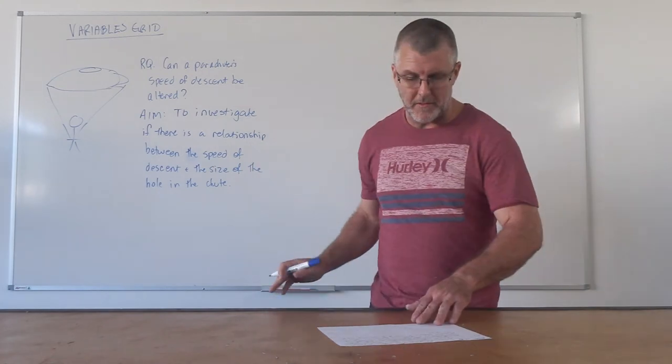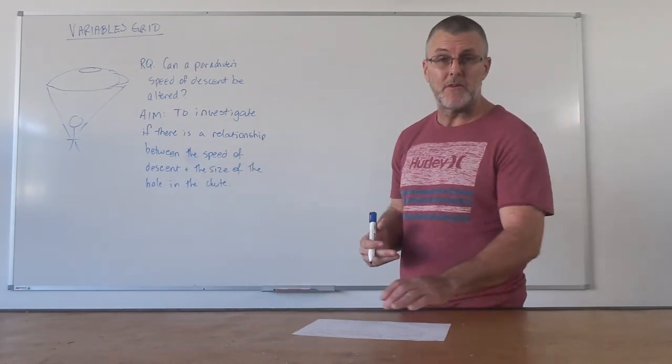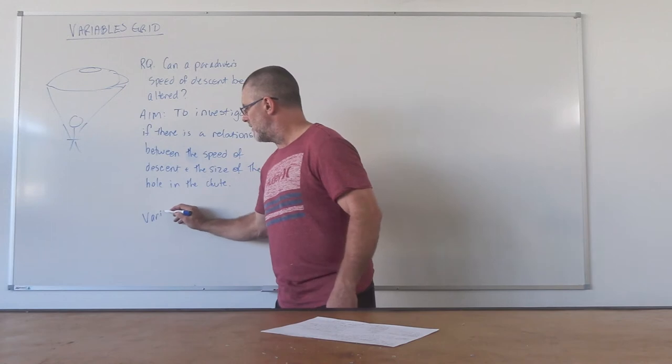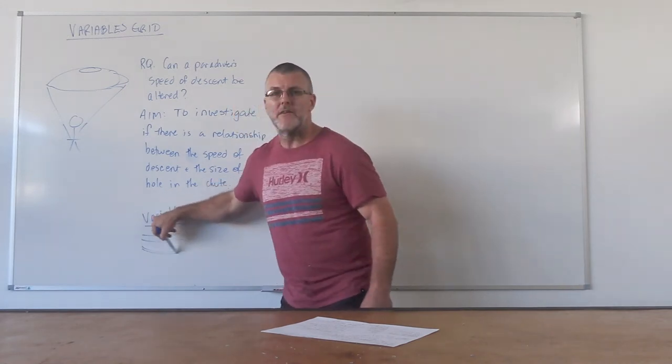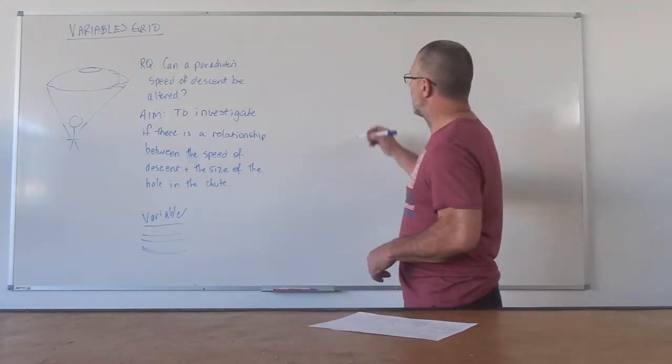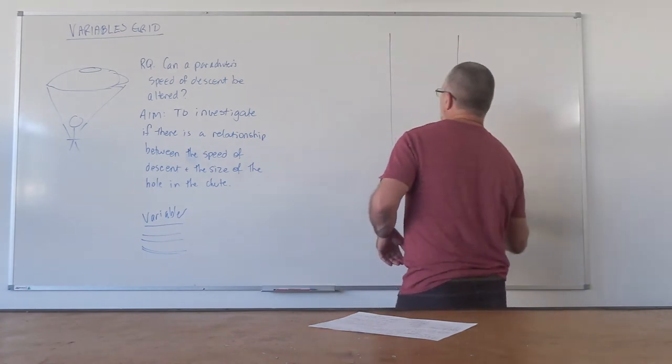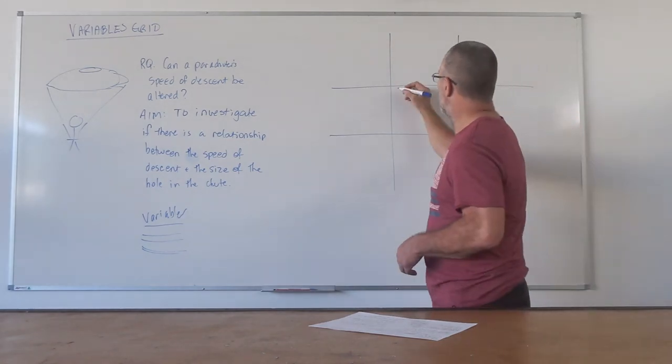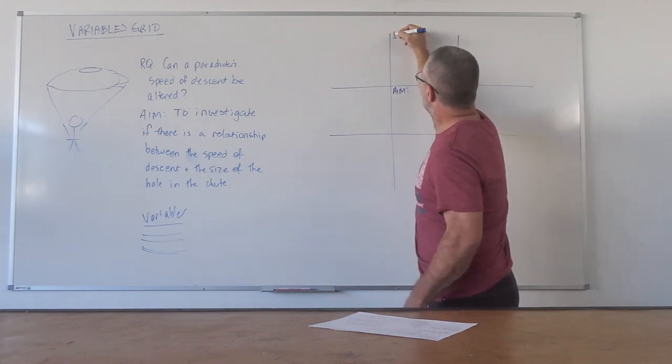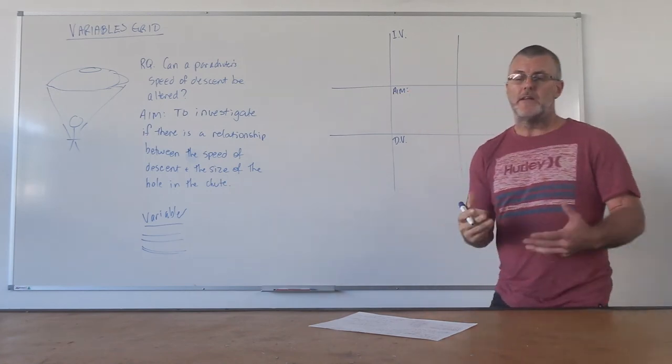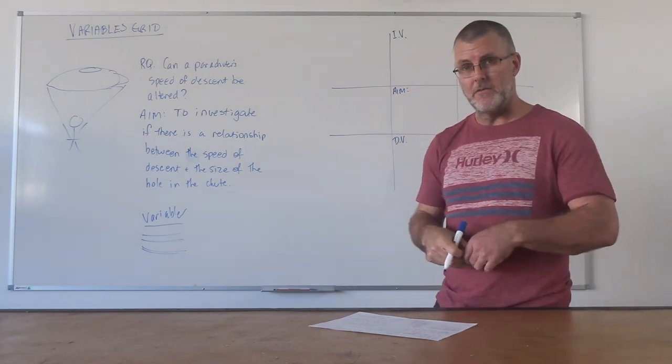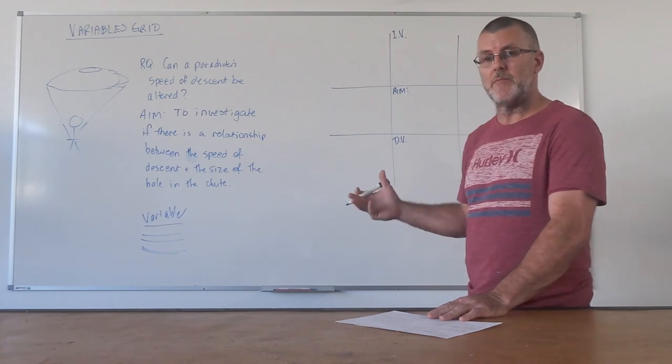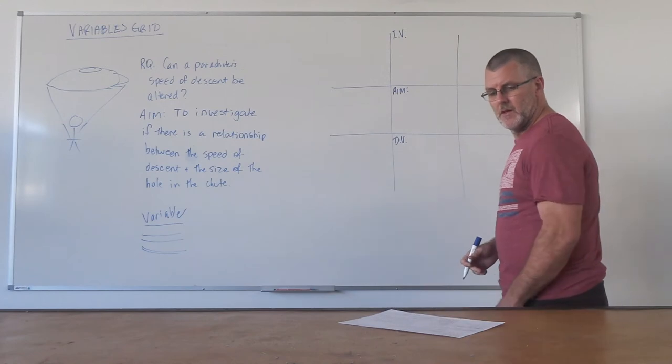Alright, so once we've got a research question and we've got an aim to start looking at investigating, we then need to draw up our variables grid. Normally we'd go and just draw a list and we'd say we'd put a heading 'variables' or something like that and then we'd just write all the variables down in the list. With the graphic organizer, what we're going to do this time, I always make sure that the kids do at least a noughts and crosses size grid, so there's nine squares in there.